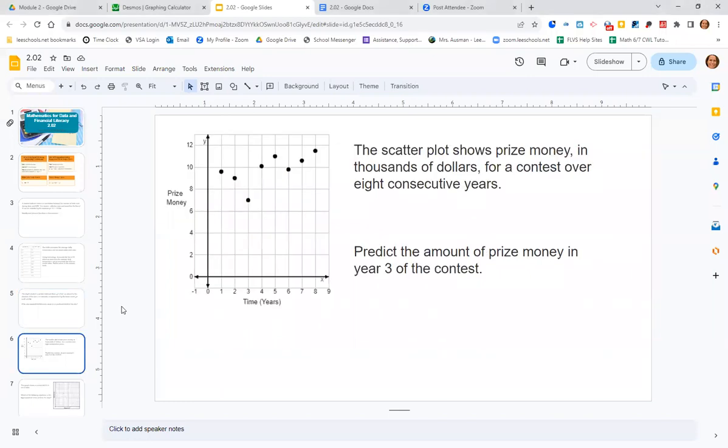Alright, now we have a scatterplot showing prize money in thousands of dollars for contests over eight consecutive years. Predict the amount of prize money in year three of the contest. So this I thought was a little tricky, but when you look at your answer choices, there was really only one possible choice. So a line of fit should kind of go between all the numbers. This isn't even the best line of fit, but we could maybe do a line of fit here or somewhere between the red and the blue line is probably our line of fit. This dot down here is kind of out of place and we're not going to spend too much time worrying about that dot. We're just going to leave it alone and try to draw a line that goes through most of the points. So for the most part, somewhere around the red line is probably what we would do.